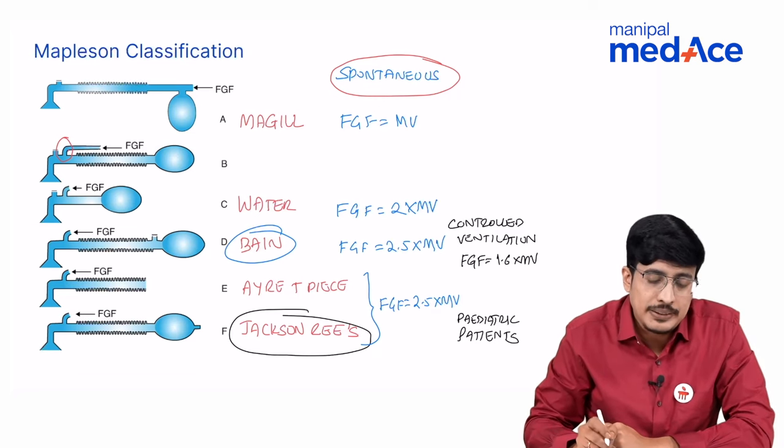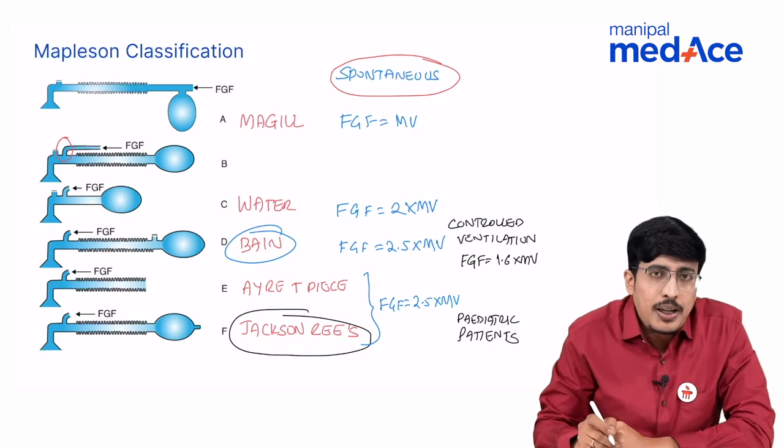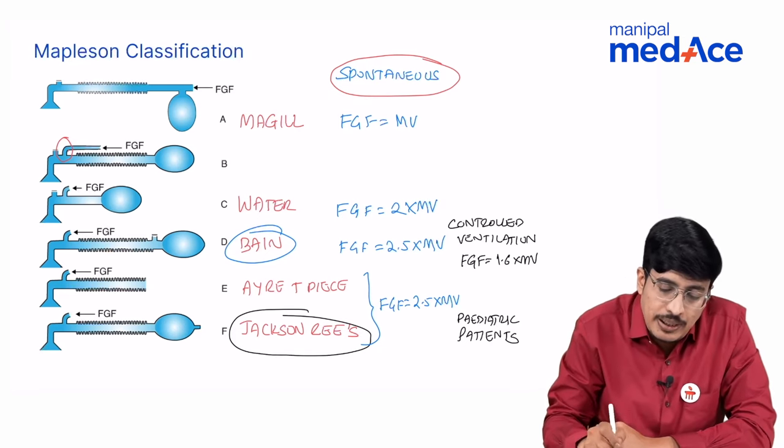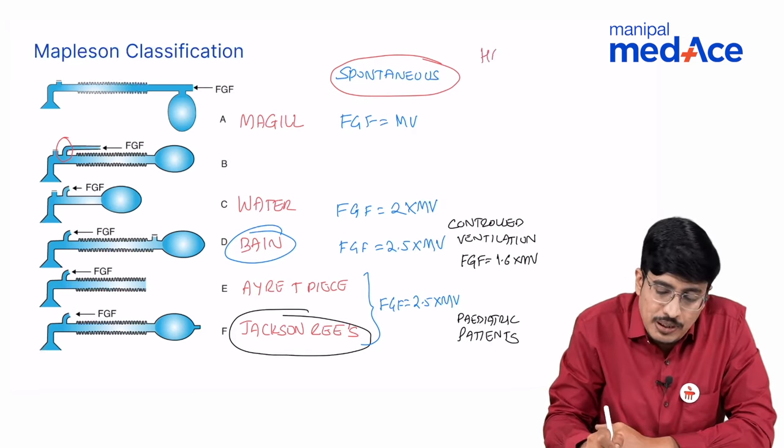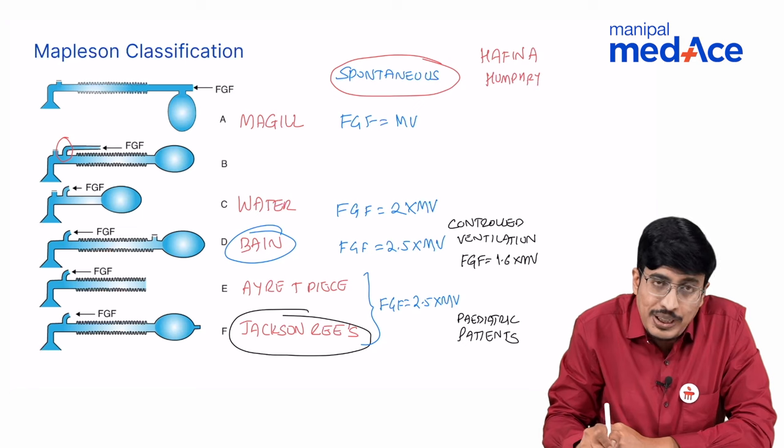So that completes a discussion on Mapleson systems, these are semi-closed circuits. What are the other types of semi-closed circuits? They are Hafina and Humphrey, Humphrey ADE.